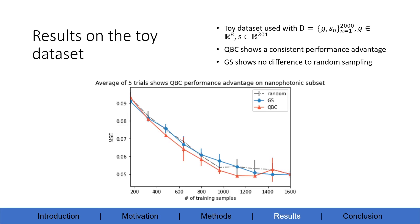The preliminary result is on a toy dataset that contains 2000 data points, 8-dimensional geometry input, and 201 spectrum output. With an average of 5 trials, we can see that greedy sampling does not have a performance difference to random sampling. On the other hand, the query by committee method shows a consistent performance advantage over random sampling. In other words, query by committee can achieve the same MSE as random sampling but with fewer training samples.